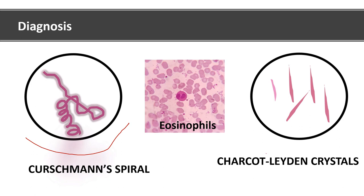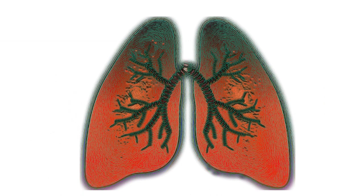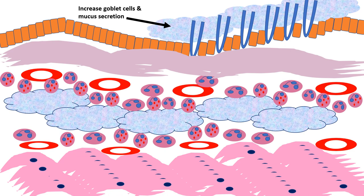These Charcot-Leyden crystals are composed of eosinophil protein called galectin-10. Gross and microscopy of bronchial asthma: in cases of patients dying of status asthmaticus there will be overinflation of lung along with areas of atelectasis. Another feature is you can see mucus plugs in the bronchioles or bronchi. The bronchial biopsy in a case of asthma will show the following features: there will be thickening of airway wall, sub-basement membrane fibrosis, increased vascularity, an increase in size of submucosal glands, and hypertrophy or hyperplasia of bronchial muscle wall.